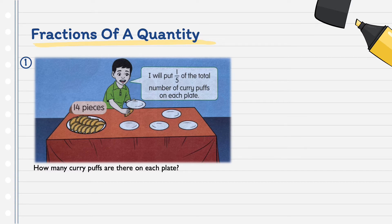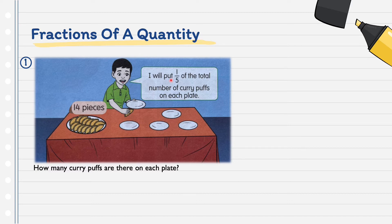Example number one. The boy says, 'I will put 1 over 5 of the total number of curry puffs on each plate.' How many curry puffs are there on each plate? Seperti yang kita dapat lihat, budak lelaki ini menyimpan 1 per 5 biji curry puff di setiap pinggan. 1 per 5 ini berapa biji sebenarnya? Macam mana nak cari? Kita akan guna kaedah darab — 1 per 5 darab dengan jumlah keseluruhan curry puff.